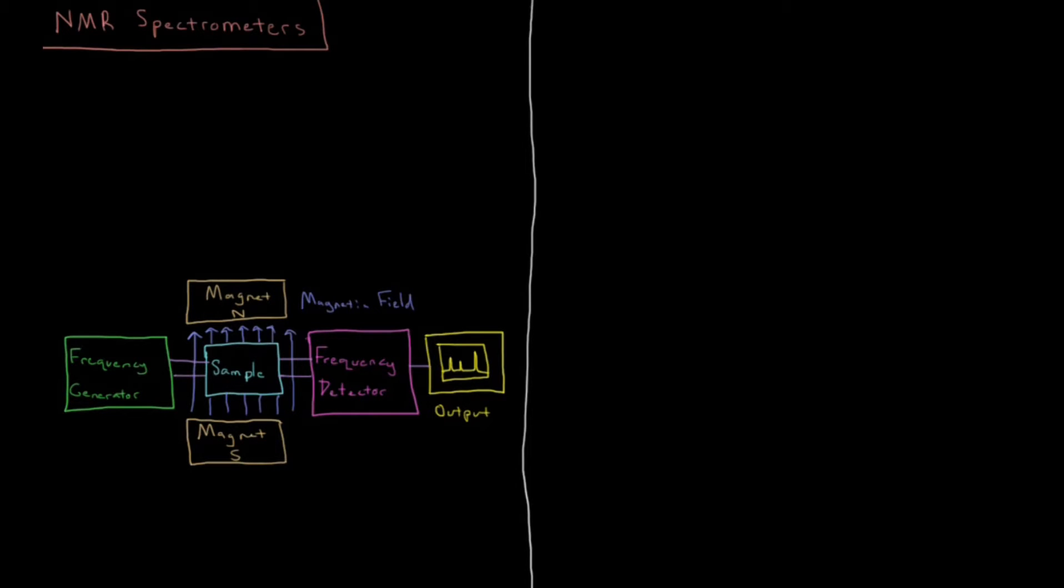In this video we're going to discuss a few of the basic principles of the operation of an NMR spectrometer. So we have this type of setup here. We have some type of device which will generate a specific frequency of radiation.